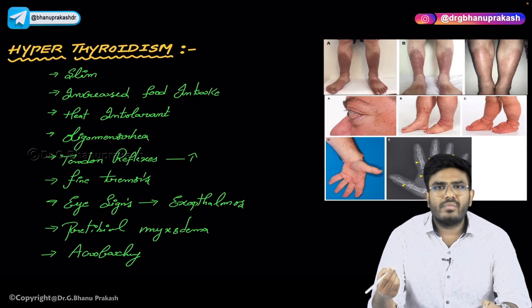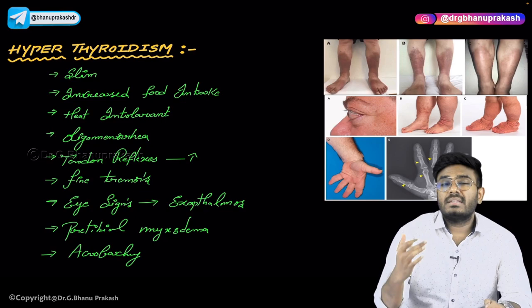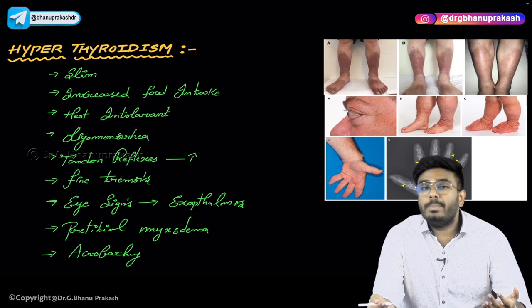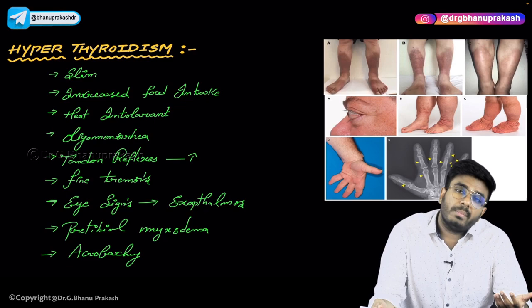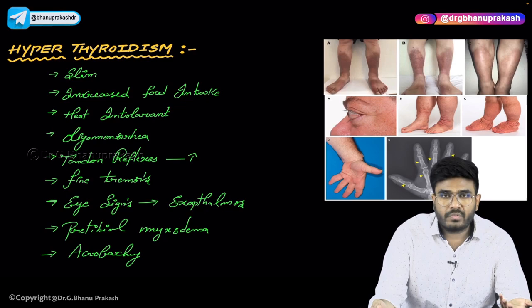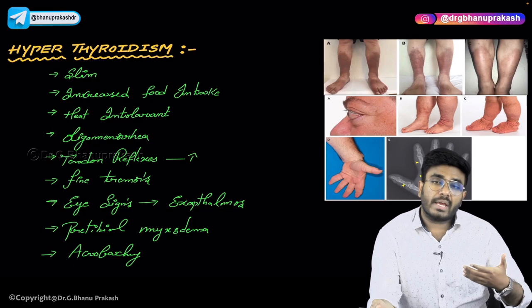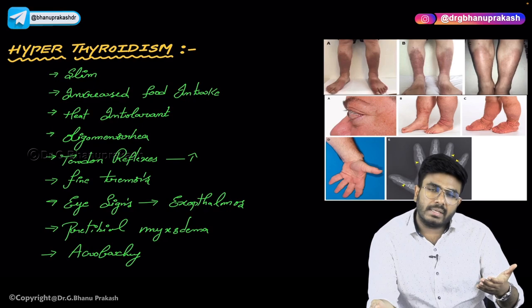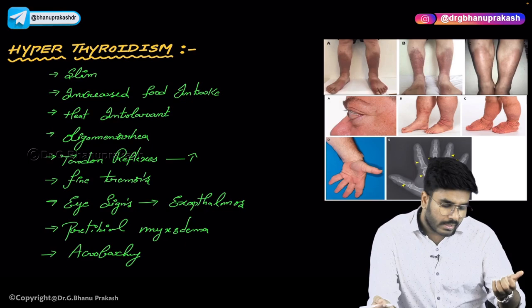In previous videos, we discussed that thyroid hormones are catabolic hormones — they break down lipids and cause lipolysis. They also increase the basal metabolic rate, which is the number of calories required to maintain homeostasis over 24 hours. So whenever there are more thyroid hormones present in the body, the number of calories needed to maintain homeostasis will automatically increase.